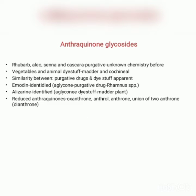Anthraquinone glycosides are found in rhubarb, aloes, senna, and cascara as purgatives, and in madder and cochineal as dye sources. A similarity between purgative drugs and dye sources was noted. Emodin was identified as the aglycone of purgative drugs such as Rhamnus species; alizarin was identified as the aglycone from the dye plant madder. Reduced anthraquinones include anthrone and oxanthrone, and the union of two anthrone molecules gives dianthrone.